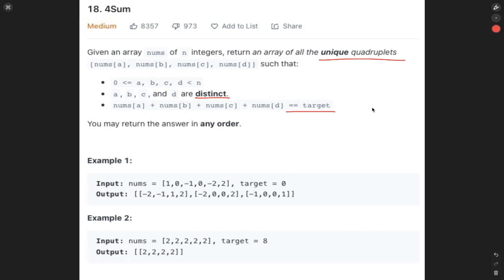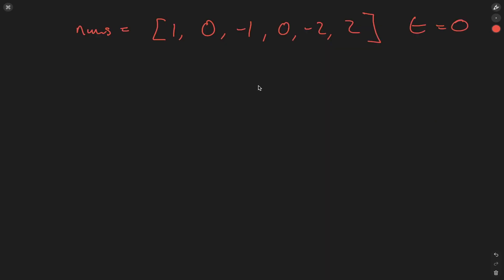This is just an alteration of the Three Sum problem — I'll add a link to that in the description so you can check it out before this question. Just like Three Sum, we're going to be using a two-pointer technique to the extreme, and in order to use that technique the input array needs to be sorted.